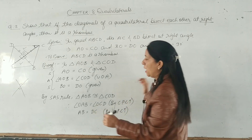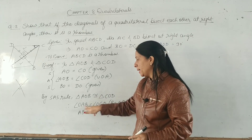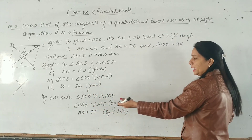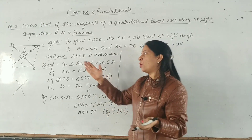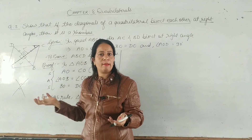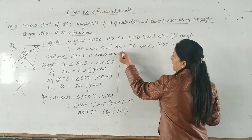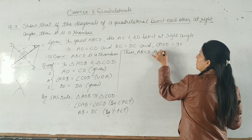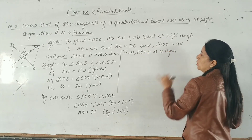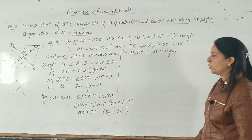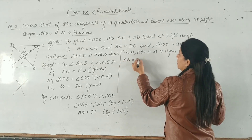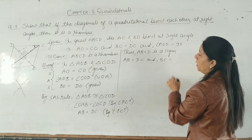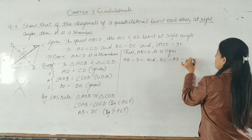Because alternate angles are equal, the opposite sides are parallel. And since opposite sides are also equal, ABCD is a parallelogram. Therefore: AB = DC and BC = AD. This is equation number 1.